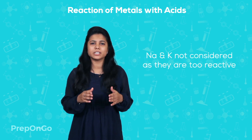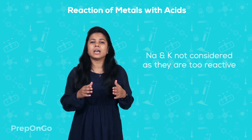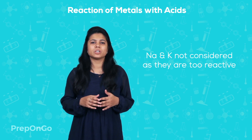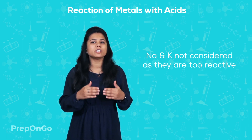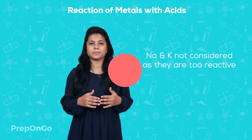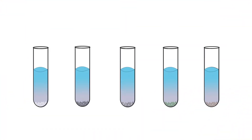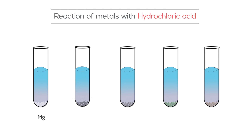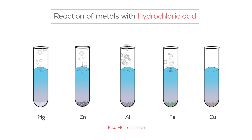We do not consider sodium and potassium as they are very reactive. To find out the reactivity of different metals, we will carry out a simple experiment. Take nearly equal amounts of magnesium, zinc, aluminium, iron, and copper in test tubes each containing 10 ml of hydrochloric acid. Observe the rate of evolution of hydrogen gas in the form of bubbles.